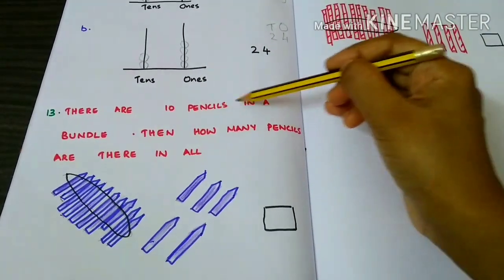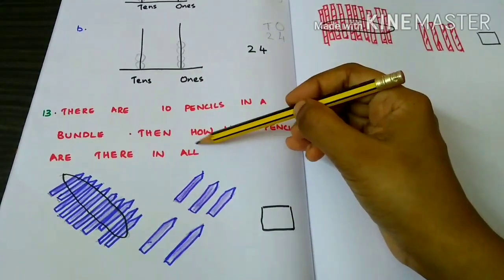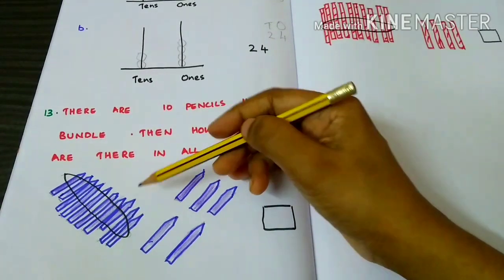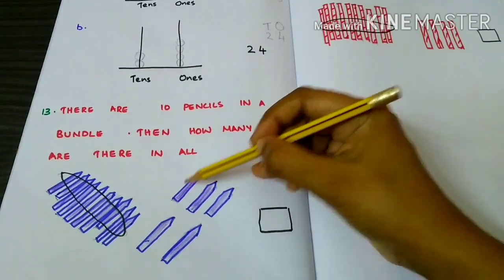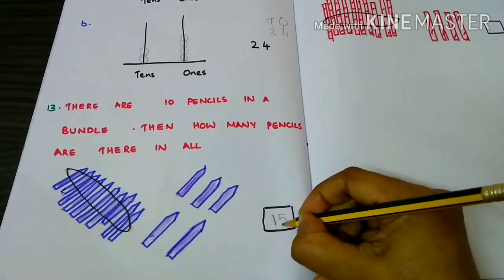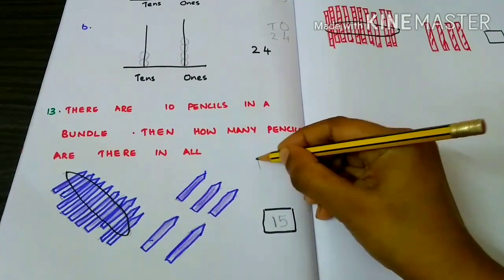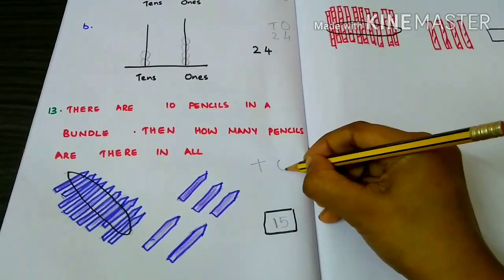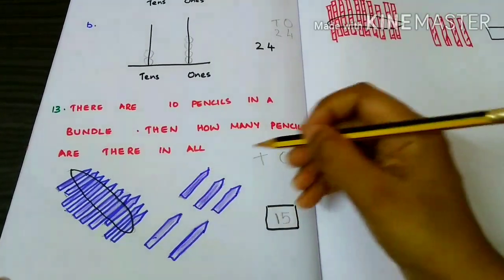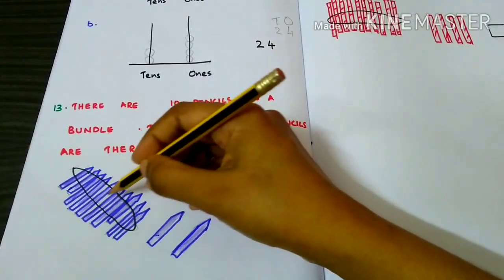There are ten pencils in a bundle. Then how many pencils are there in all? There are already ten pencils, so we have to add just the rest: eleven, twelve, thirteen, fourteen, fifteen. Another way is tens and ones — count 1 through 5 — write five on the ones place and one on the tens place.